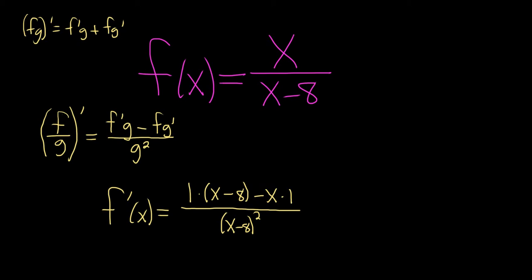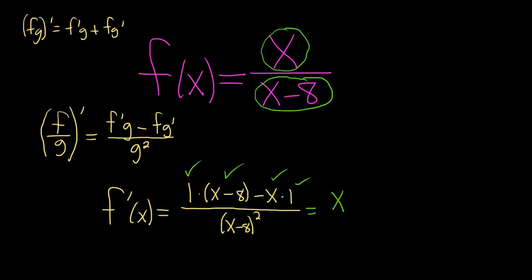Let me go over that one more time. The derivative of the top piece — the derivative of x — is 1, times the bottom piece, which is x minus 8, minus the top, which is x, times the derivative of the bottom piece, which is just 1, because the derivative of negative 8 is 0, all over the bottom piece squared. This is equal to x minus 8 minus x over (x minus 8) squared.